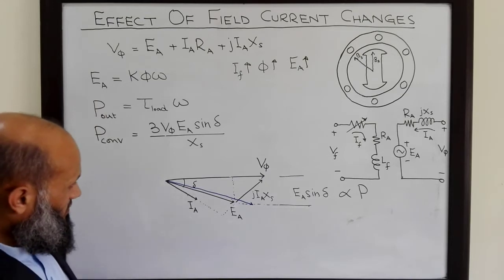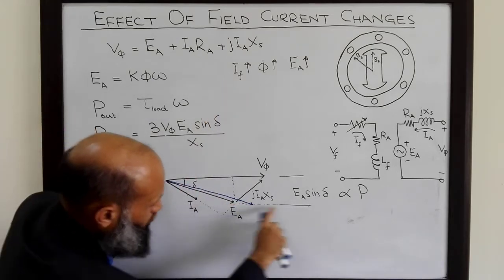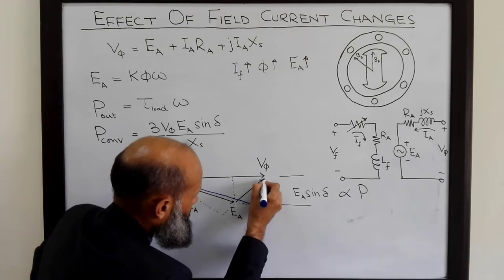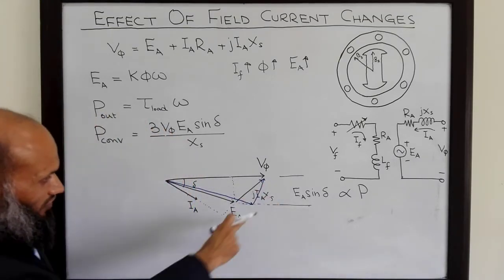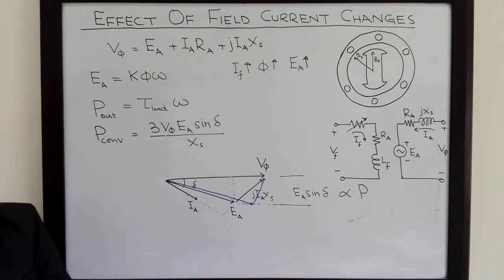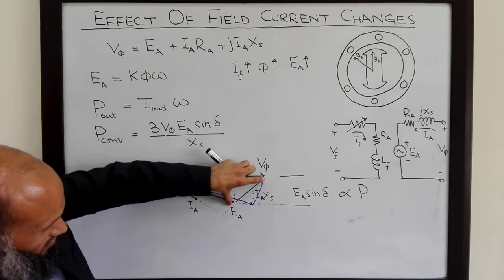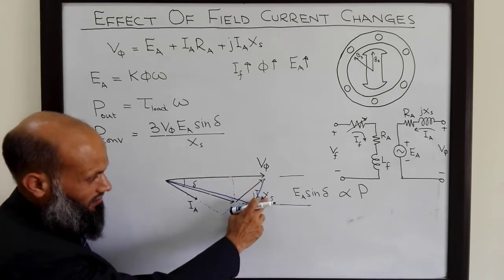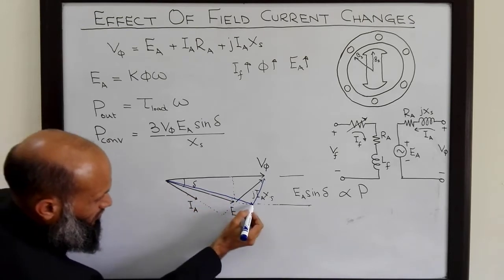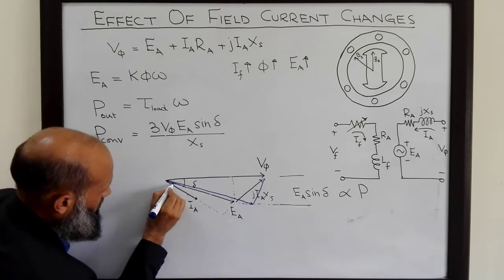When If is increased, Ea will increase in length. This new Ea phasor — call it Ea2 — moves along this horizontal line. Since Xs is constant and the jIaXs phasor is longer, Ia will decrease. The new current Ia2 will be perpendicular to the new jIaXs phasor and will have smaller magnitude than Ia1.